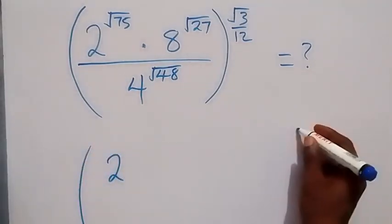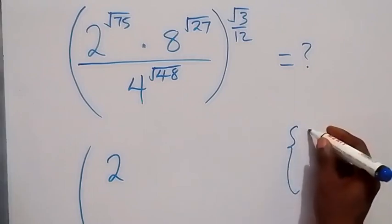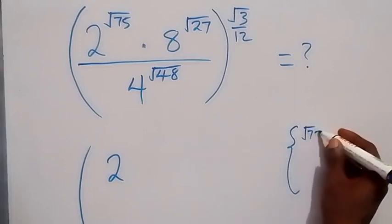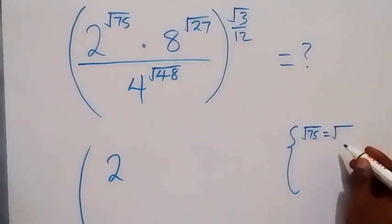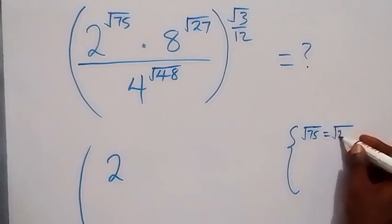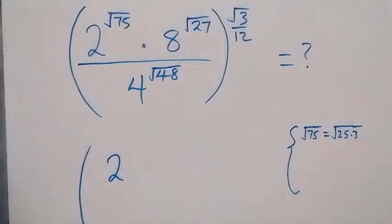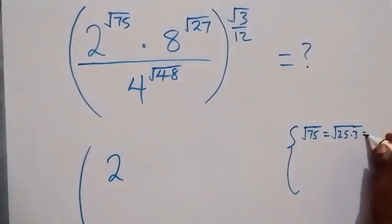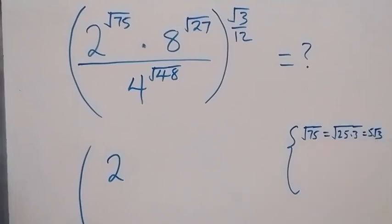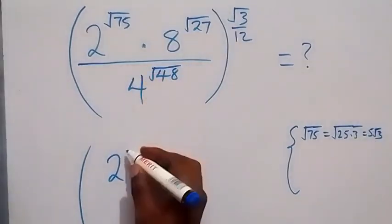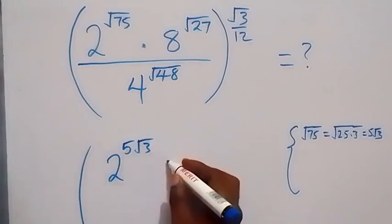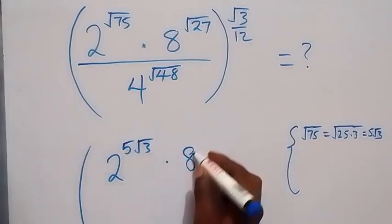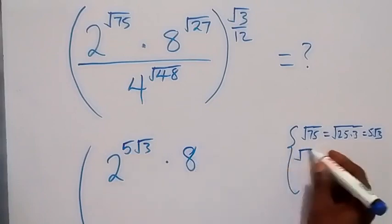For root 75, we can separate it and say this is going to be root 25 times 3. From here, root 25 is the same as 5, so we take 5 out and that's 5 root 3. Then we can write this as 2 raised to power 5 root 3.